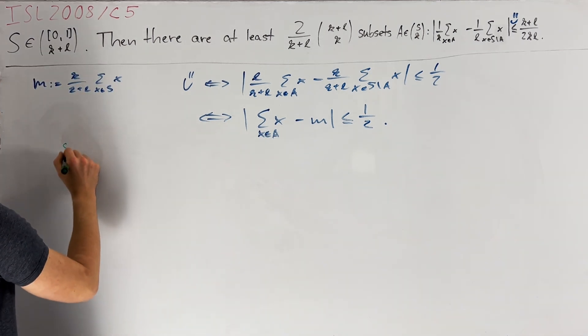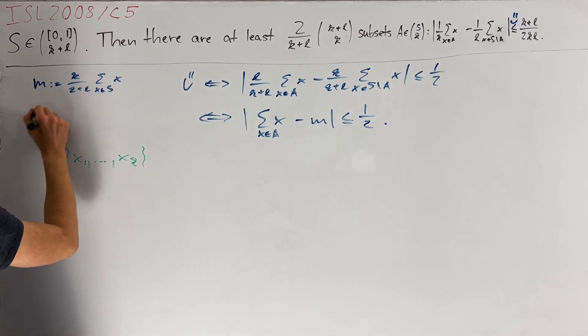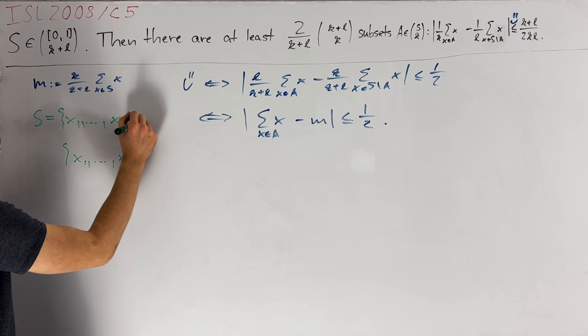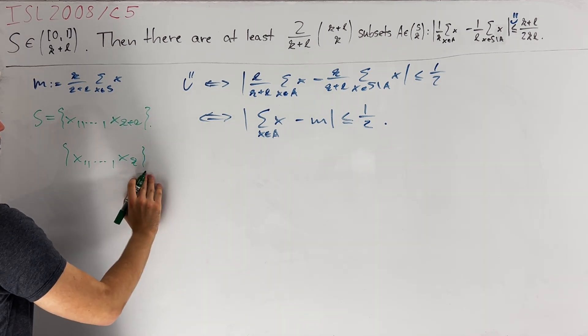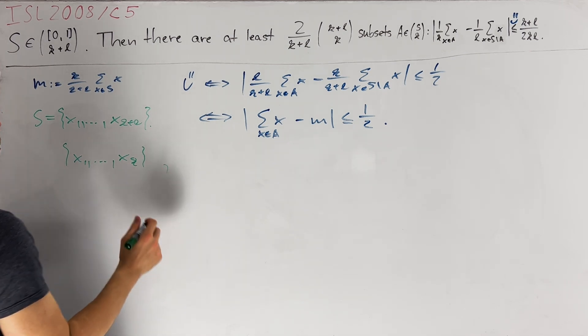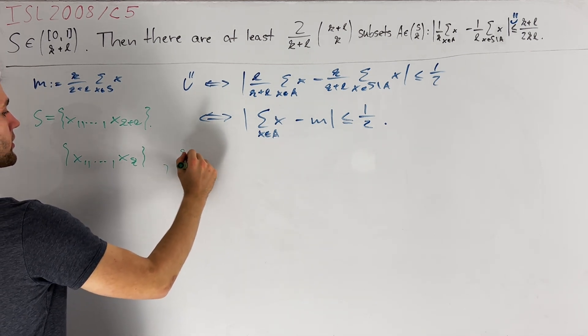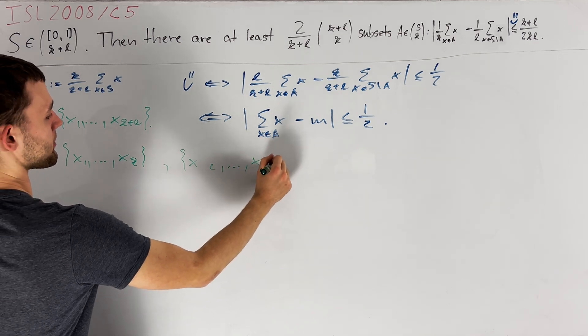Let us start by considering some A in S choose K. For example, write X1 up to XK where X1 up to XK plus L are the elements of S. We know that a slight perturbation of the element of this set only changes its sum by a bit. That's why we also want to consider the set X2 up to XK plus 1 now.